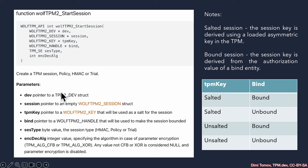In the `wolfTPM2_StartSession` prototype, there is an interesting parameter at the end: the encrypt-decrypt algorithm. This parameter specifies the algorithm for parameter encryption. As developers using a TSS API, we need to know the two variations: either AES-CFB or XOR. Note that if we use 'none' for this parameter, parameter encryption cannot be enabled for that TPM session.